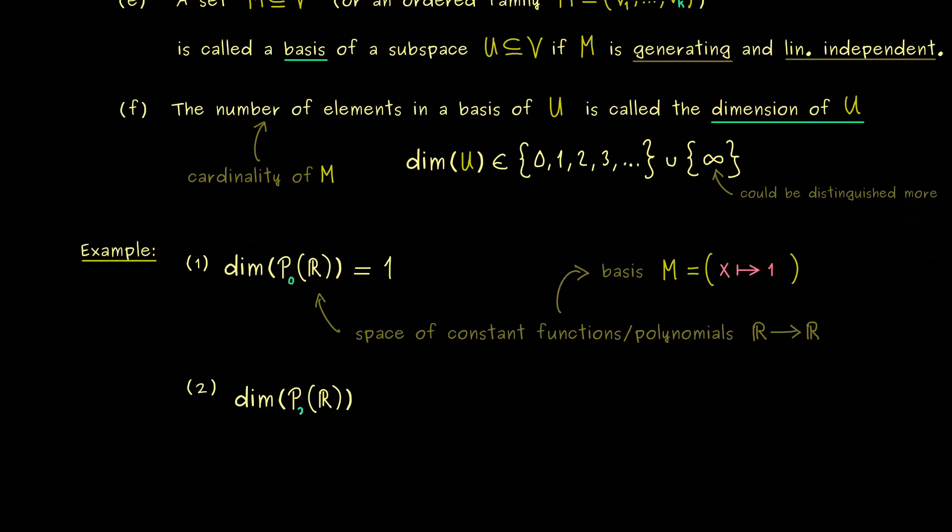And for the next one, let's take P with index 2. This means, this now is the set of the quadratic polynomials. Or more precisely, the polynomials where the degree is less or equal than 2. And also there, it's not hard at all to write down a basis.